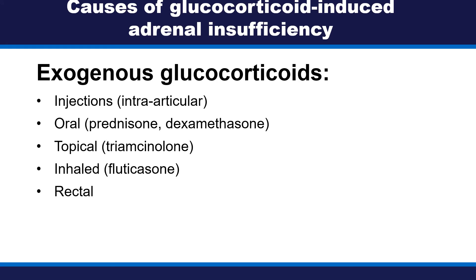What is the cause of glucocorticoid-induced adrenal insufficiency? This would be any type of exogenous glucocorticoids. Most commonly, it is through injections, intra-articular injections, oral prednisone or dexamethasone prescribed most commonly for inflammatory disorders, topical glucocorticoids such as triamcinolone, inhaled glucocorticoids such as fluticasone, or rectal glucocorticoids.